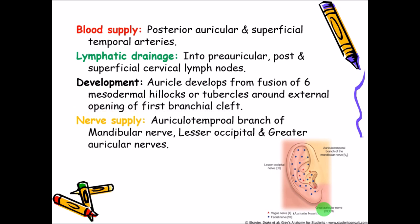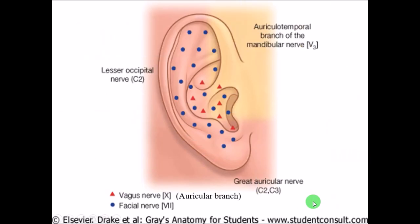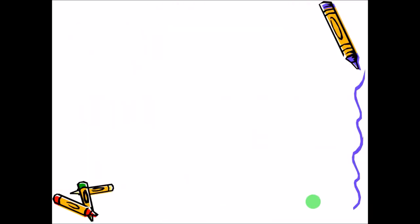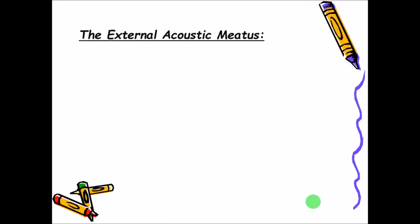The nerve supply is by the auriculotemporal branch of the mandibular nerve, supplying the upper part of the auricle, the lesser occipital nerve supplying the middle part, and the greater auricular nerve supplying the lower most part.